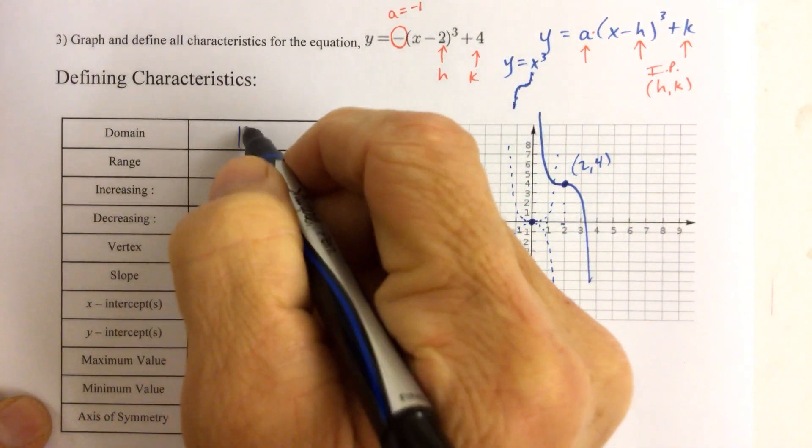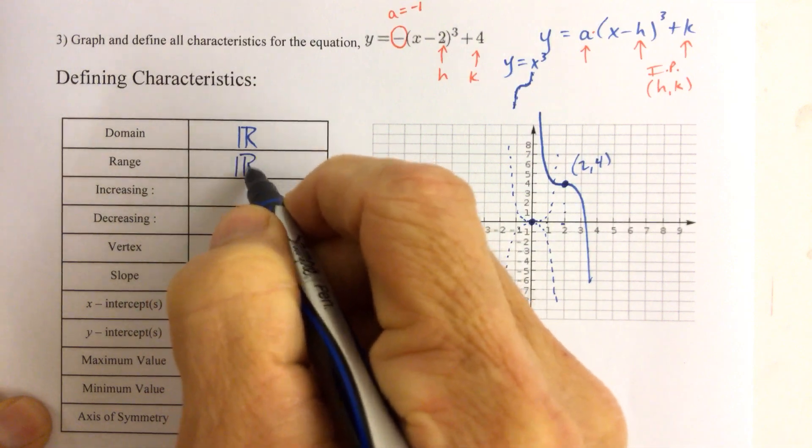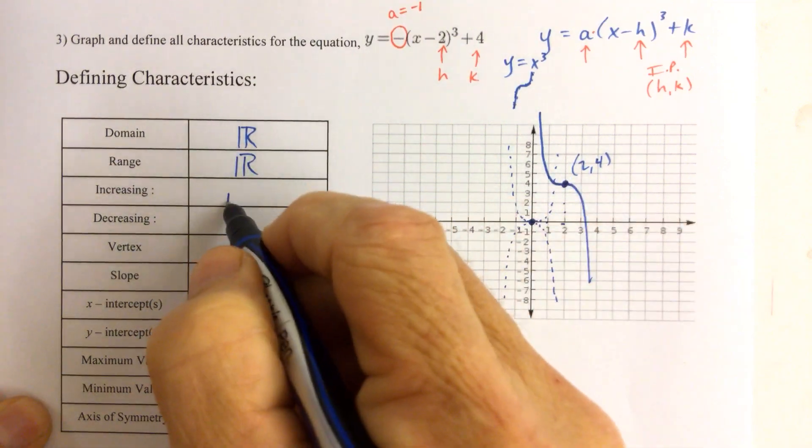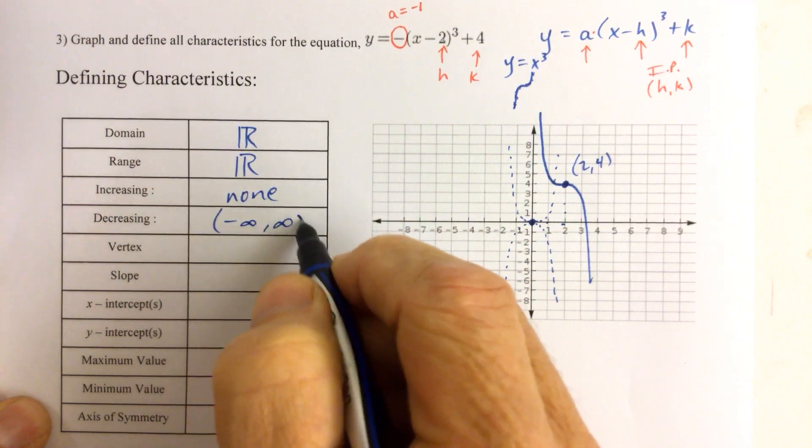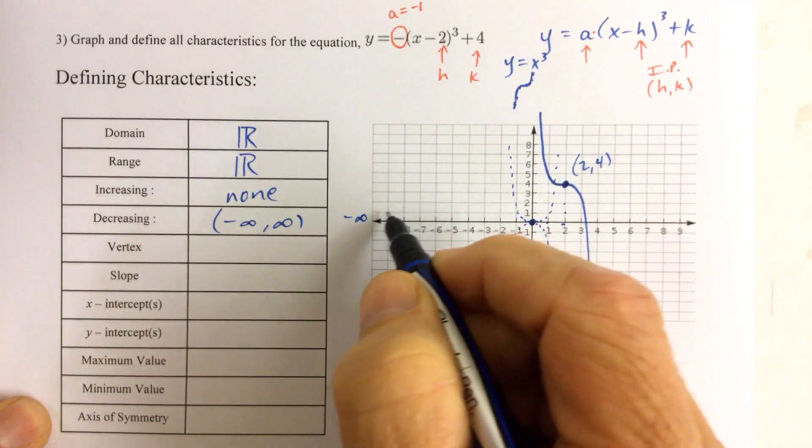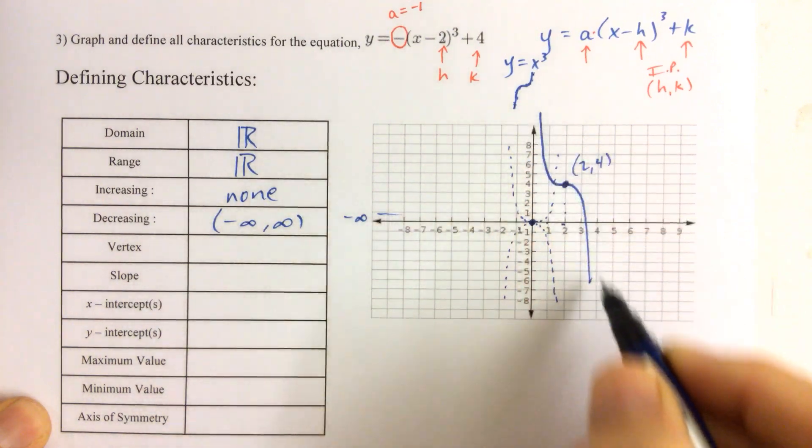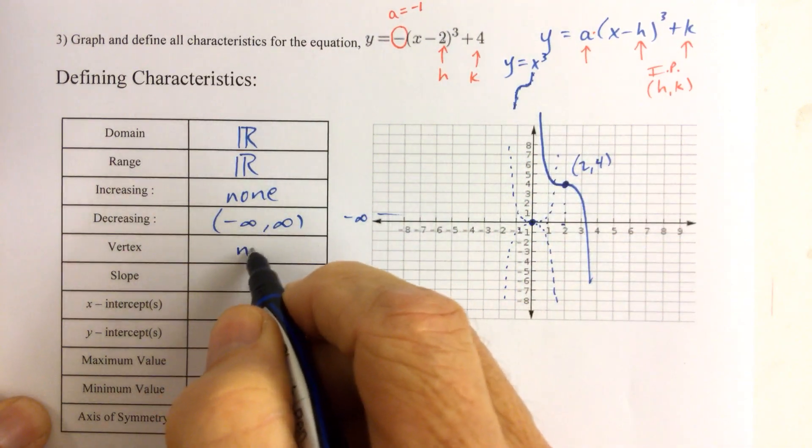The domain is all real numbers, the range is all real numbers. It's not increasing at all. It's decreasing from negative infinity to positive infinity, because as x moves from left to right, the y values are always getting smaller. There is no vertex.